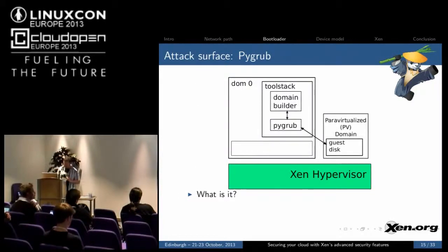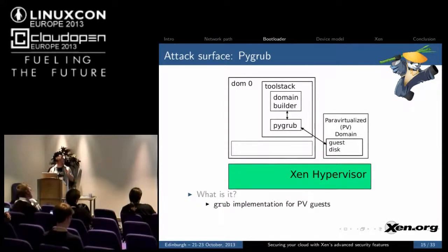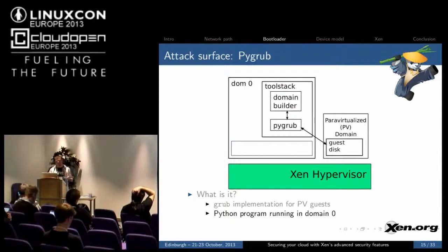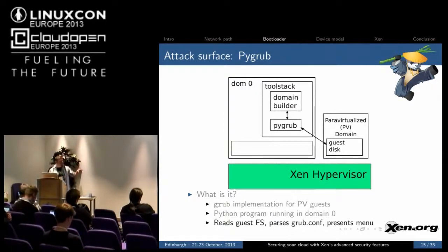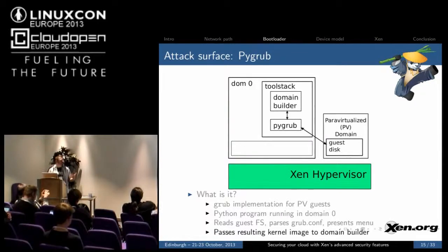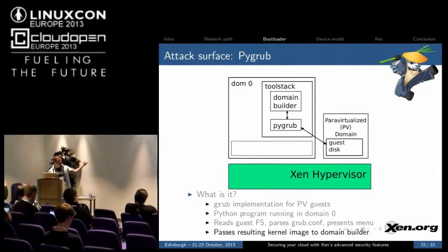The next attack surface is PyGrub. PyGrub is a grub implementation for PV guests — it's a Python program which runs in domain zero. It will read the guest file system, parse the guest grub.conf, and then present a menu. Based on the results of that menu or the defaults in the grub.conf, it will pull the kernel image and the initrd to the domain builder, which will then unpack those and put them in the domain's memory, ready to execute and start the domain.